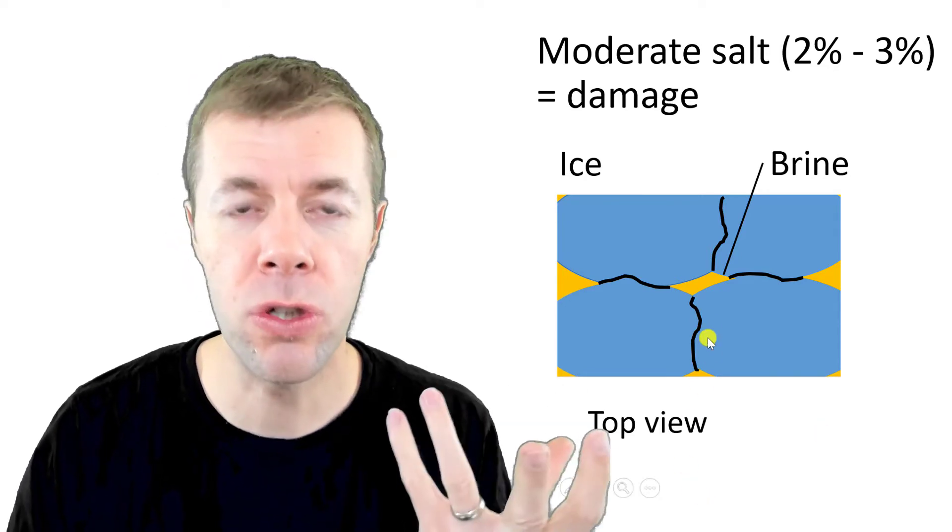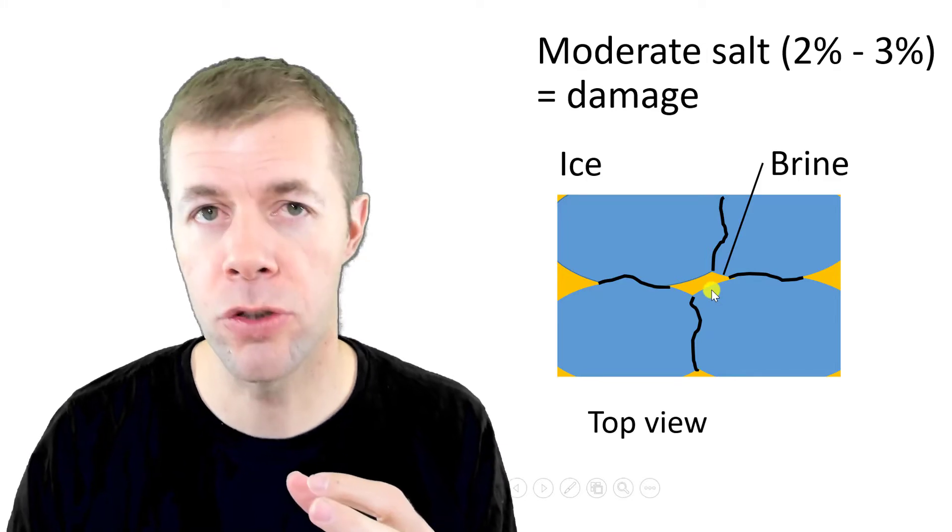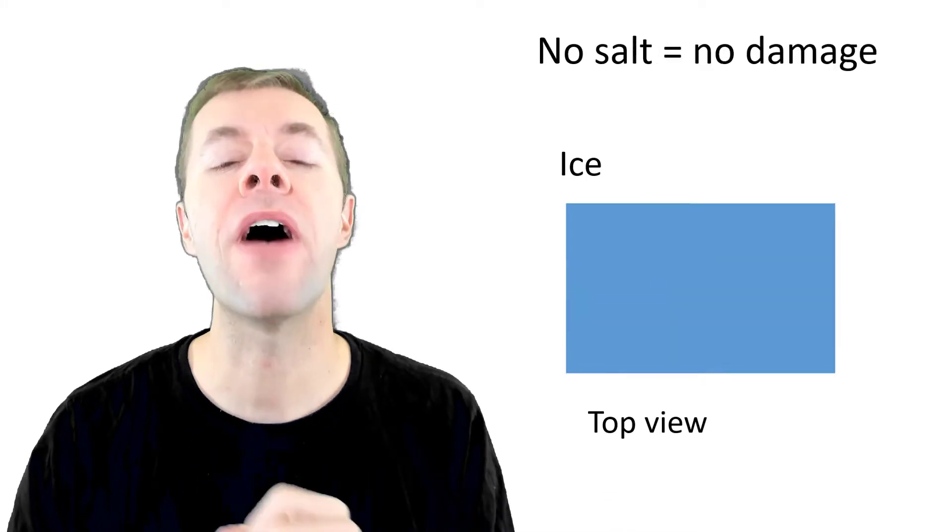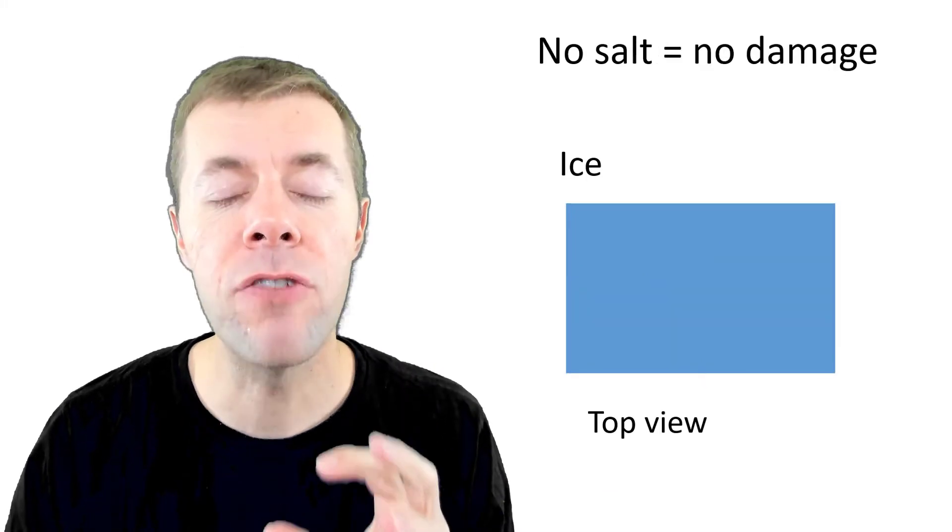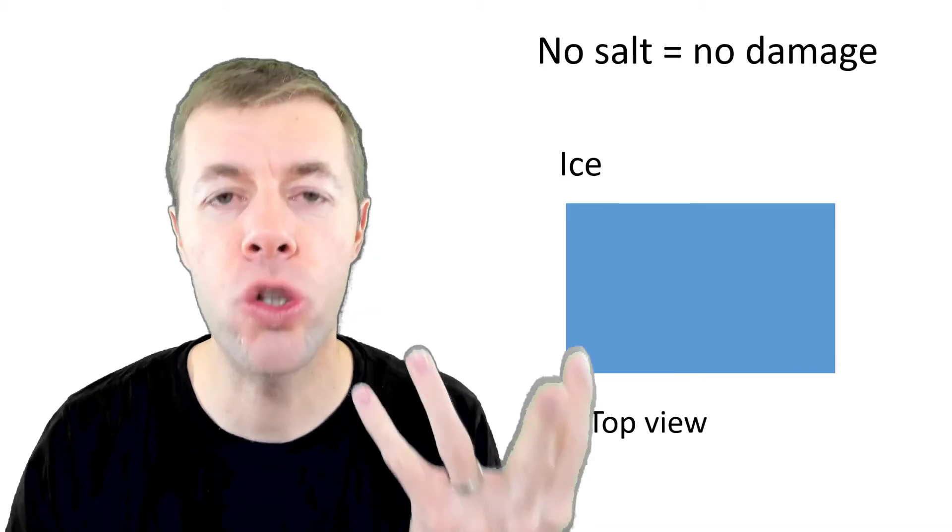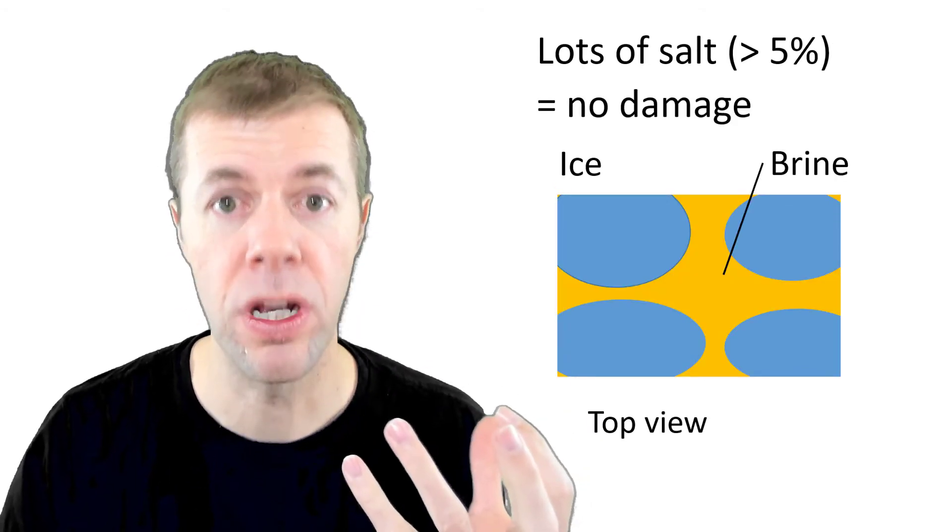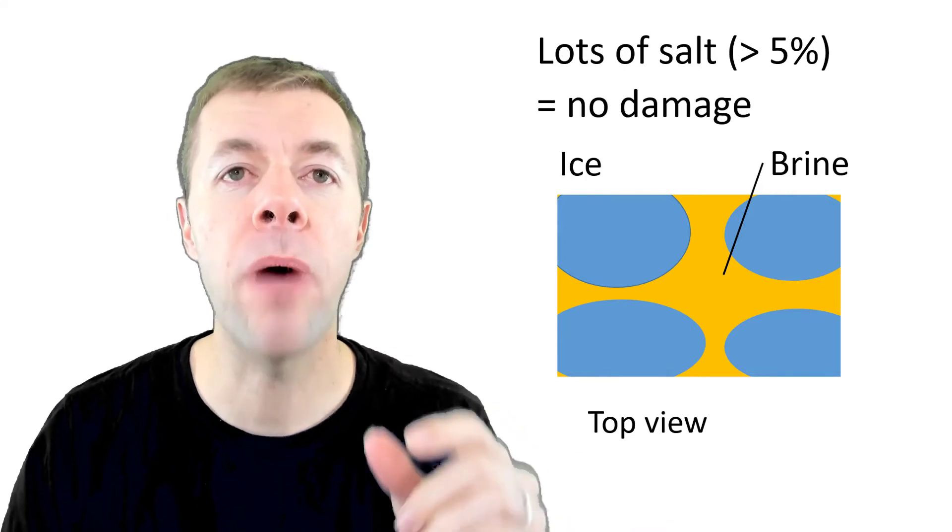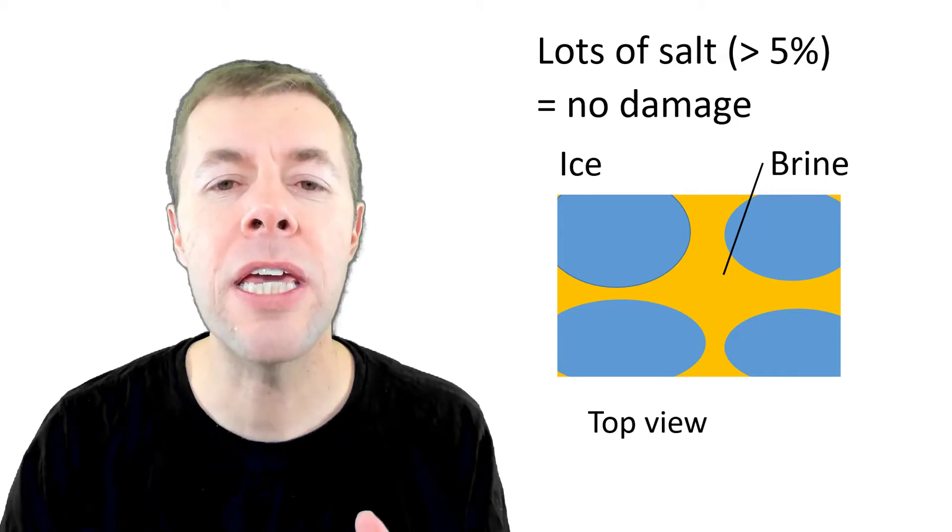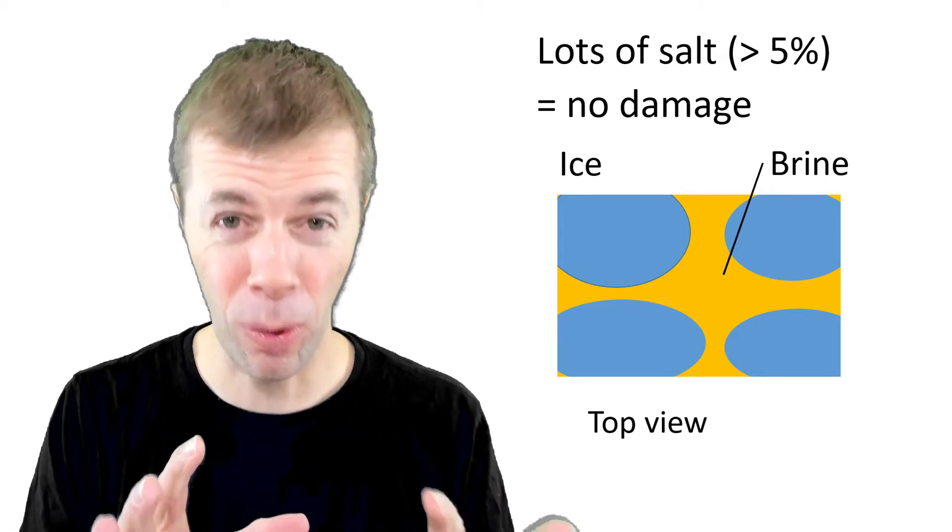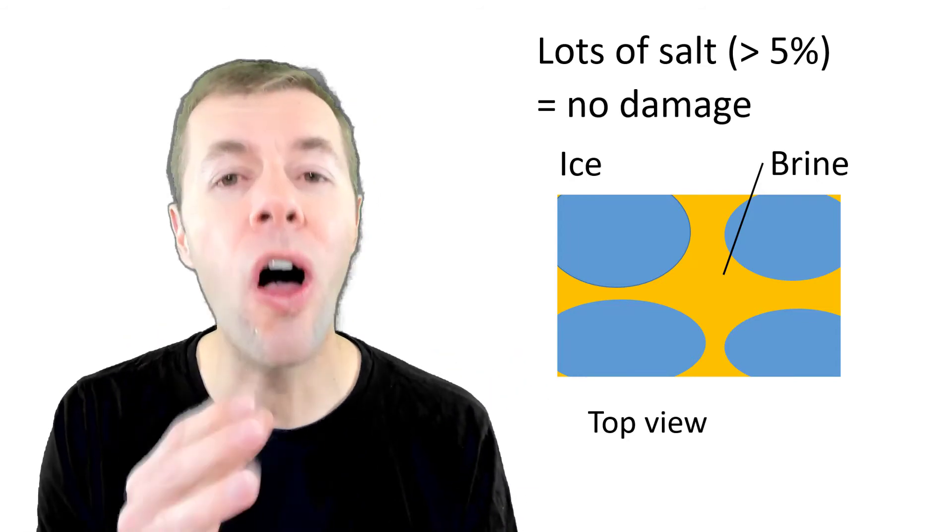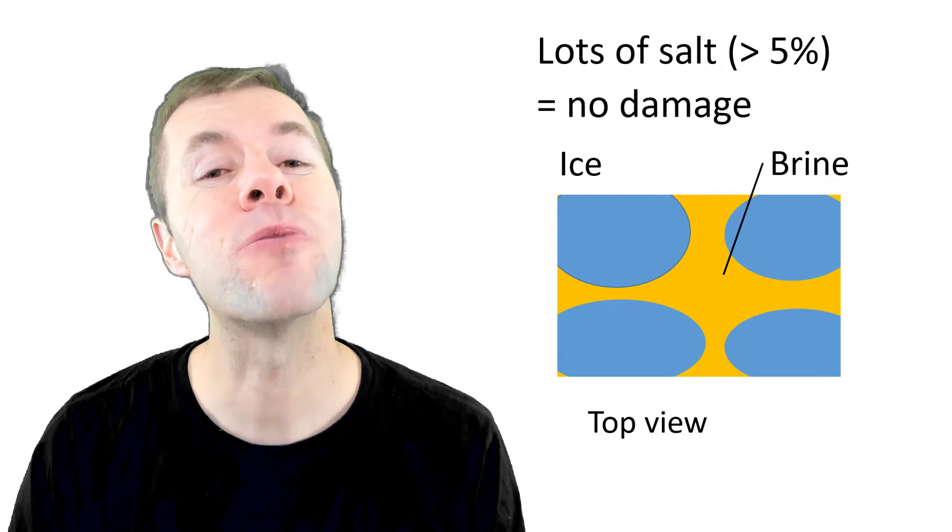Because these pockets get to a certain size, they start to cause cracks. Those cracks propagate inside the concrete and cause damage. But if I have no salt, then I'll have no damage because I have no brine pockets. But if I use super high concentrations—lots and lots of salt, very high concentrations—then I'll get no damage because my brine pockets will never get small enough to cause damage. I'll keep the ice from totally forming. This is sometimes not practical. It's very expensive to do and could cause other damages to your concrete, but it won't spall.